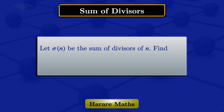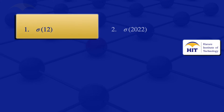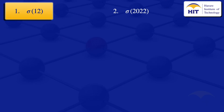Let sigma(n) be the sum of divisors of n. In this video I'm going to find: number one, sigma(12), and number two, sigma(2022). To answer those questions, I'll start by looking at how we can find the sum of divisors in general.